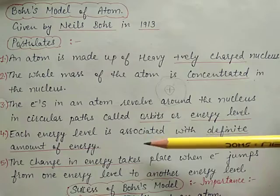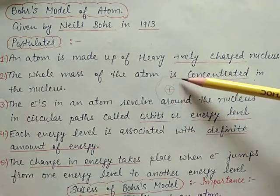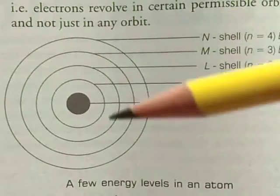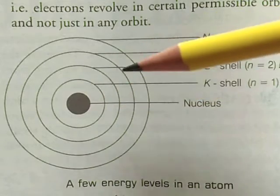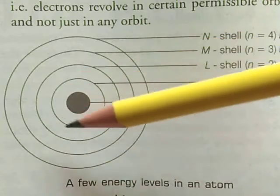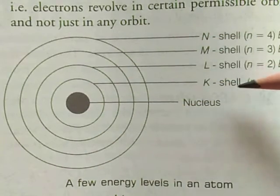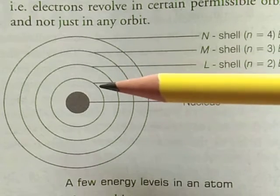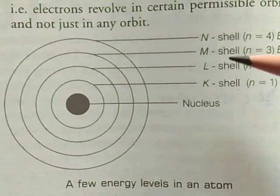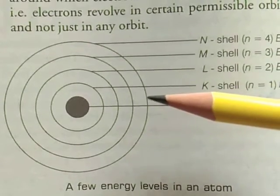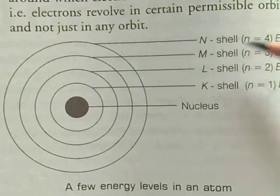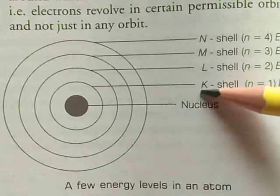Each energy level is associated with a definite amount of energy. This is the nucleus and the next energy level is where the electrons revolve around the nucleus. This is called the K shell. These are also called energy levels or energy shells. Starting from the nucleus, the energy levels are represented by numbers 1, 2, 3, 4, or by the alphabets K, L, M, N shell.